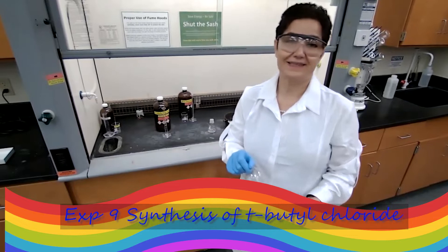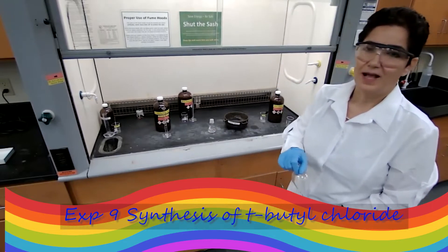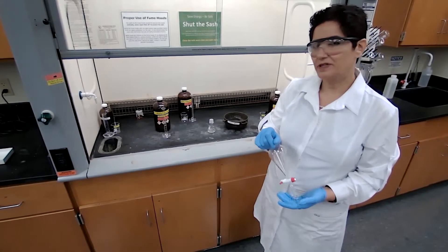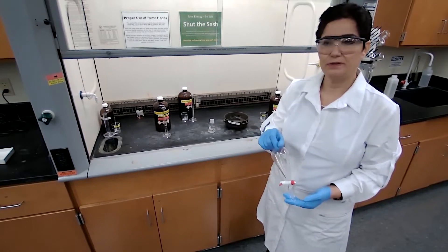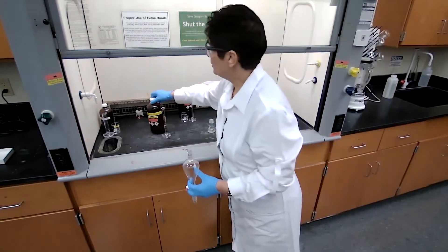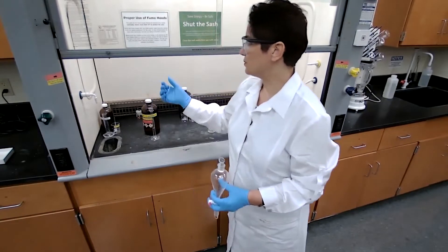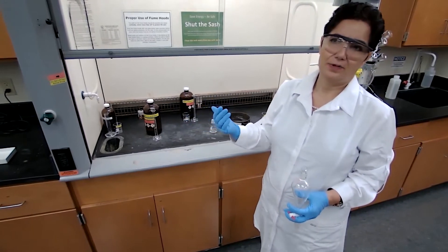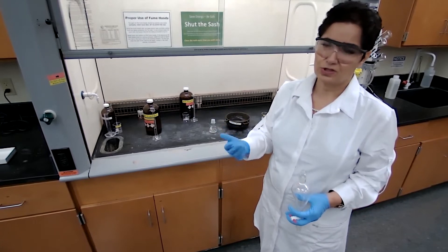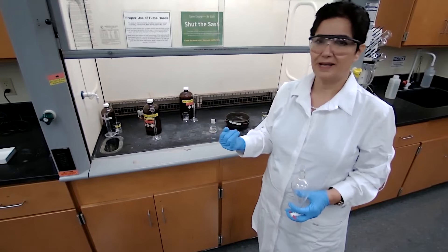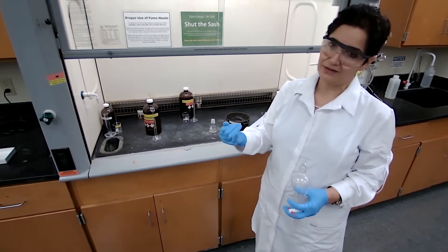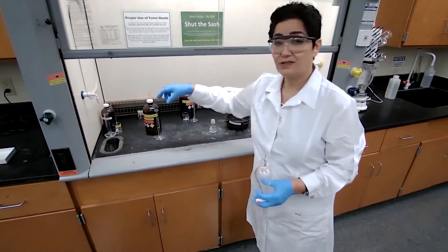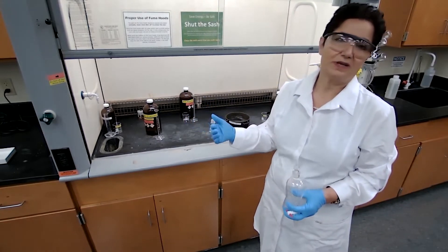Doctor in memory again, and this is the last experiment for organic one: preparation of t-butyl chloride. We're using t-butyl alcohol or 2-methyl-2-propanol. This reaction is the SN1 reaction, a unimolecular nucleophilic substitution reaction. It has a carbocation intermediate. The more stable the carbocation, the faster the reaction. Because this alcohol is going to give us tertiary carbocation, it's going to be a fast reaction.